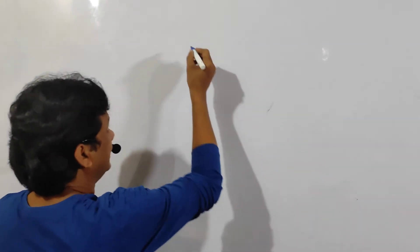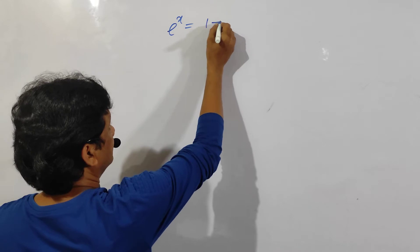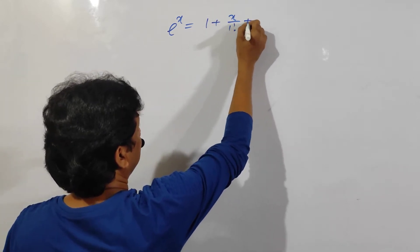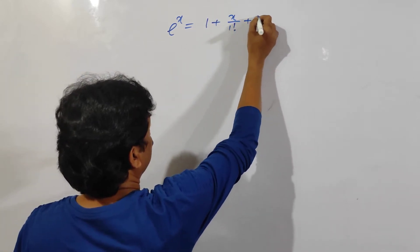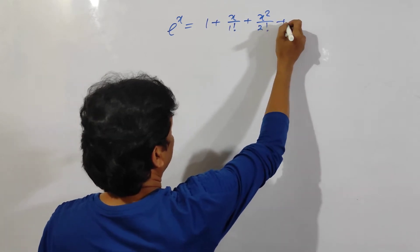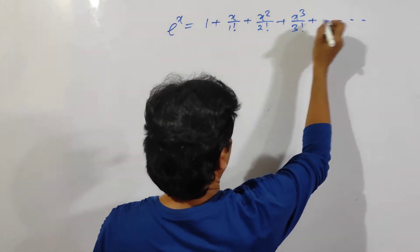Hello everybody, and today I am going to tell you about the exponential series. That means e to the power x is equal to 1 plus x by factorial 1 plus x squared by factorial 2 plus x cube by factorial 3 plus 1.